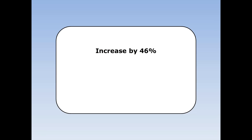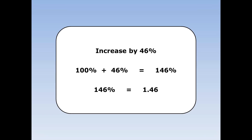To increase something by 46%, I want the original 100% plus an extra 46%. 100% plus 46% is 146%. 146% as a decimal is 1.46. So to increase something by 46%, multiply by 1.46.